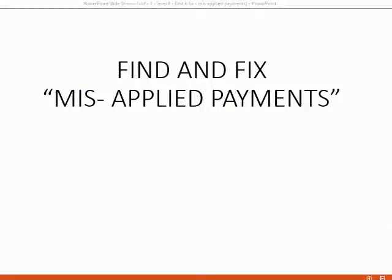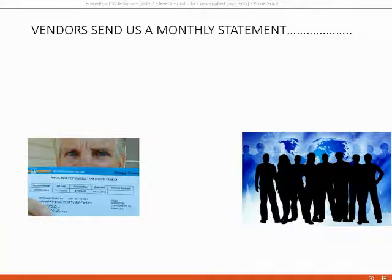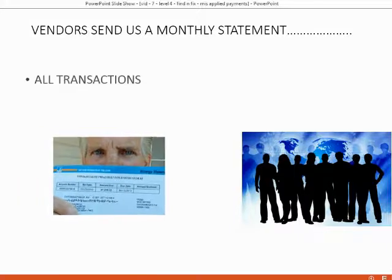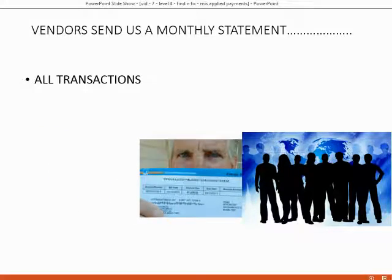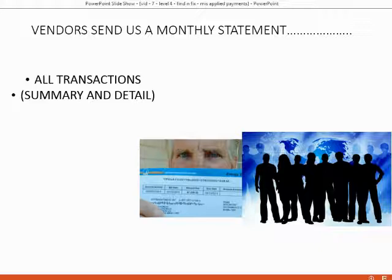Now that you've had some practice with vendor transactions, we will talk about finding and fixing the most challenging mistake. To manage a misapplied payment, the normal procedure in business is to make sure that our records match the vendor's. The vendor sends us a monthly statement that includes all transactions — both a summary of the remaining unpaid bills and a detail of every single transaction during that period.